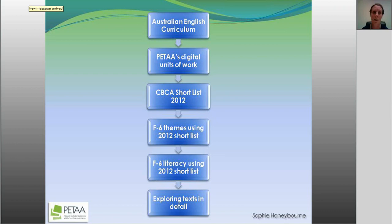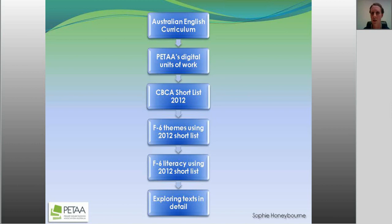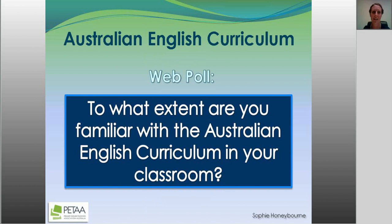Here's the outline for today. We'll very briefly look at the Australian Curriculum English, since not everyone is familiar with it given different states are at different stages of implementation. Then I'll take you through Peter's digital units of work online, showing you the format and how to access them. Then we get into the CBCA shortlist — the four categories I'm covering — looking at texts from the perspective of cross-curricular themes, the literacy of the texts, and a detailed look at four texts with an activity. It's going to be a busy hour and a half.